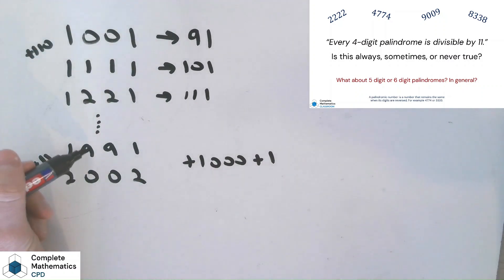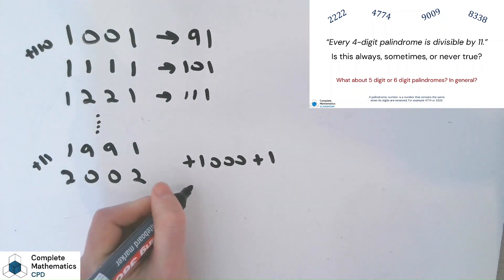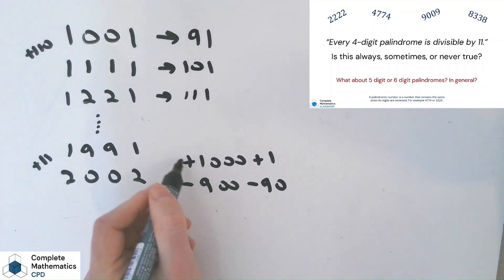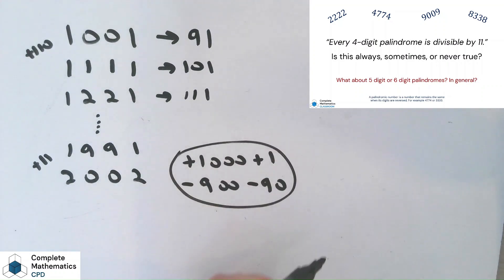And then what's happened to the hundreds and the tens? Well, we've subtracted 900 and we've subtracted 90. And when you work out the results of all that calculation, you just get plus 11. So as we bridge to the thousands, we're only adding on 11, so it's still going to be divisible by 11.